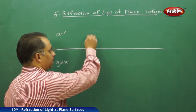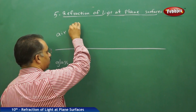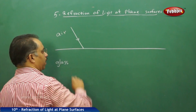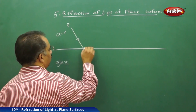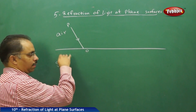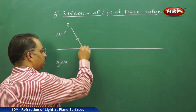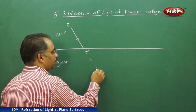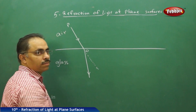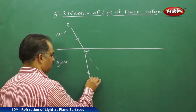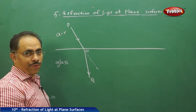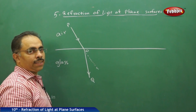Let us consider light traveling from air to glass. We will consider a ray of light, say P, and here the point is O. So O is the point of incidence at the boundary of air and glass. Instead of going straight, it will bend and travel. PO is the incident ray and OQ is what we will call the refracted ray.